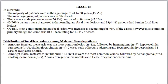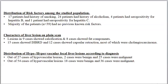The most common malignant focal lesion overall was metastasis, accounting for 40% of cases. The most common primary malignant lesion was HCC, accounting for 13.3% of cases. Among females, metastasis was the most common lesion seen in 12 patients, followed by hemangioma and cholangiocarcinoma in 9 patients, and two cases each of hepatic adenoma and focal nodular hyperplasia, and one case of dysplastic nodule. Among males, metastasis was seen in 18 patients and HCC in 13 patients, followed by hemangioma and cholangiocarcinoma in 5 patients and two cases of regenerative nodules. 17 patients had a history of smoking, 24 had a history of alcoholism, 4 patients had HBsAg positivity for hepatitis B, and 1 patient had positivity for hepatitis C. Most patients had no previous known risk factors.